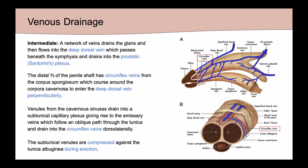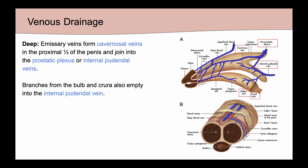The distal two-thirds of the penile shaft has circumflex veins from the corpus spongiosum — these course around the corpora cavernosa and enter the deep dorsal vein perpendicularly. There are also venules coming from the cavernous sinuses that drain into a subtunical capillary plexus, giving rise to emissary veins that follow an oblique path, travel through the tunica, and drain into the circumflex veins dorsolaterally. It is these subtunical venules that are compressed against the tunica during an erection.